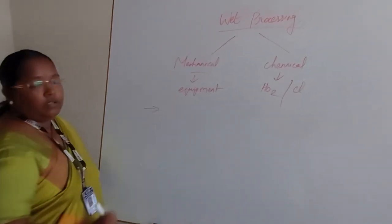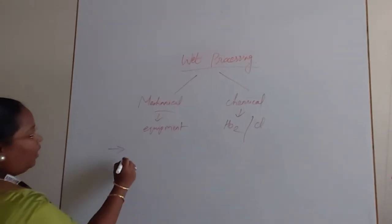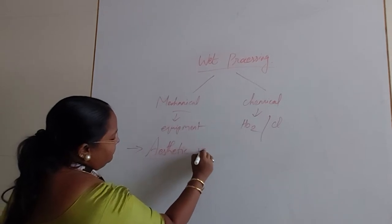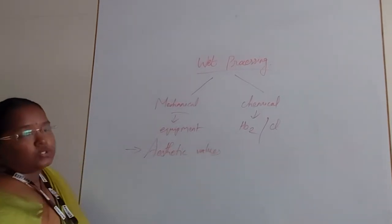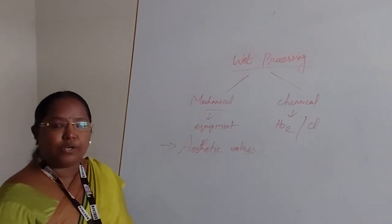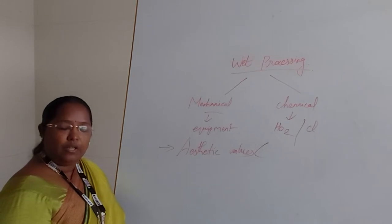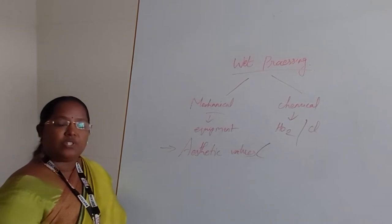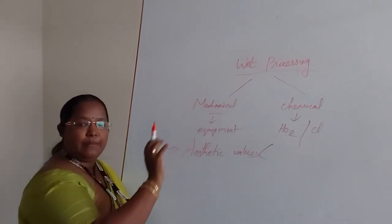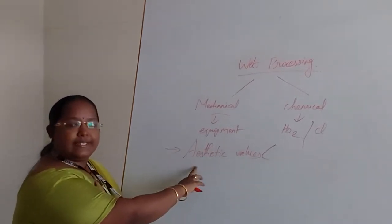Wet processing is done to give aesthetic values. So what are aesthetic values? While the material is produced with some finishes to introduce an end use, that is called aesthetic values. For example, if we want to change the feel of the fabric, we have to give some mechanical or chemical treatments to give an end product — that is called aesthetic values.